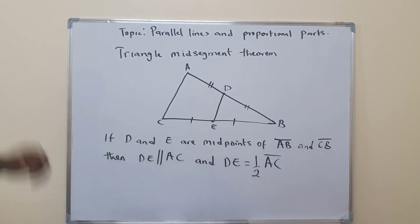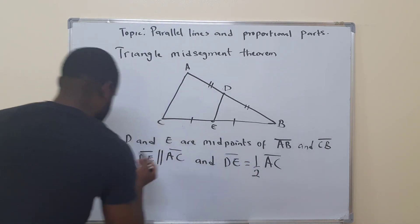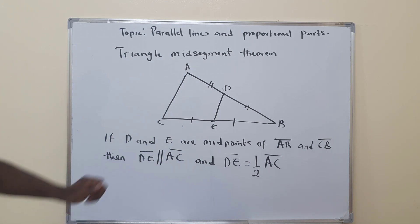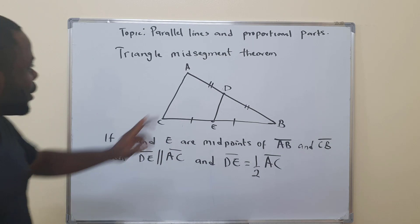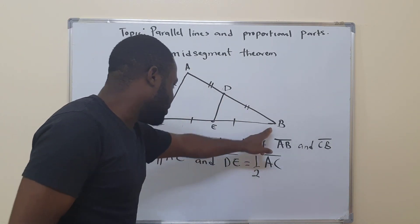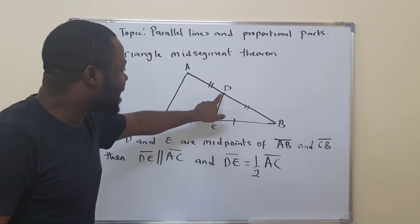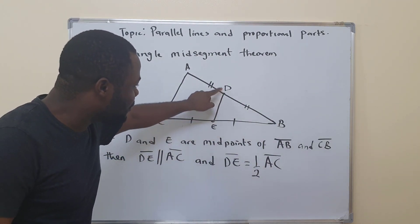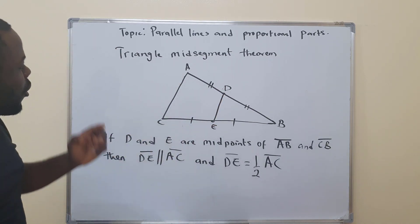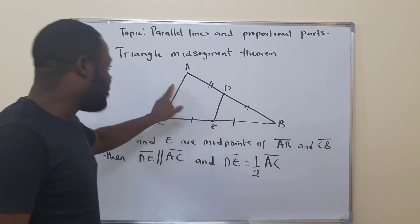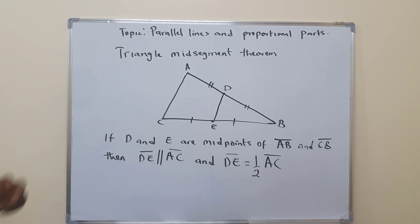That is what it means. Always remember to add this line segment symbol. So if DE is the midsegment of AB and CB, definitely the length from this point to this point must be twice this, or this will be half of that. This line is half of this line, or you can say this is twice the half-segment.